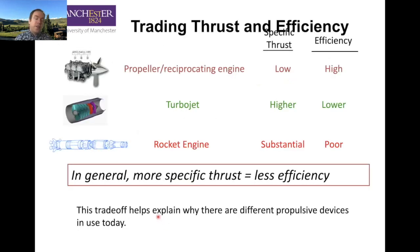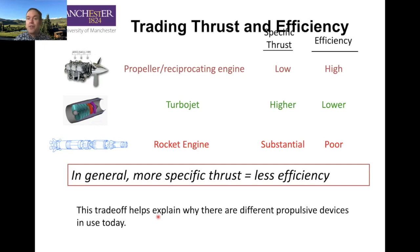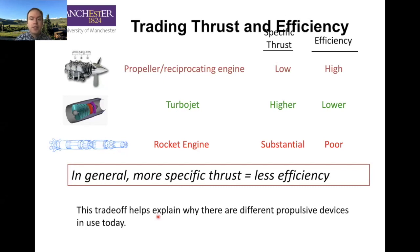I want you to think about this: for our propulsion systems, we trade thrust versus efficiency — or really, specific thrust versus efficiency. Efficiency is how much thrust you can produce for a given energy input, while specific thrust is how much thrust you can produce for a given mass of propulsion system or mass flow rate of fluid. The lower our specific thrust, the higher our efficiency. Rockets have huge specific thrust but very poor efficiency, while propellers and reciprocating engines may have very low specific thrust but quite high efficiency. We'll discuss much more of this in video four.